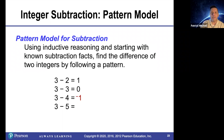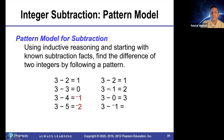Three minus five should be negative two. Here's another example. We already know that three minus two equals one and three minus one equals two. So every time we decrease this number, the difference should increase. For example, three minus negative one should be four.